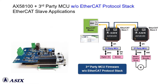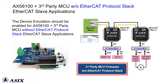This is the AX58100 and third-party MCU without EtherCAT Slave protocol stack application diagram. These kinds of applications should enable the EtherCAT Slave device emulation function for normal operation.